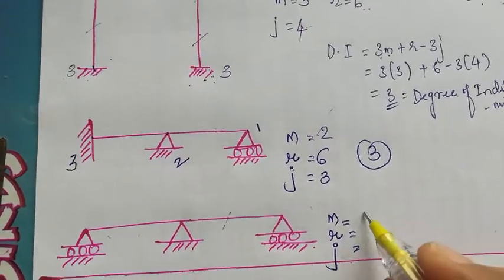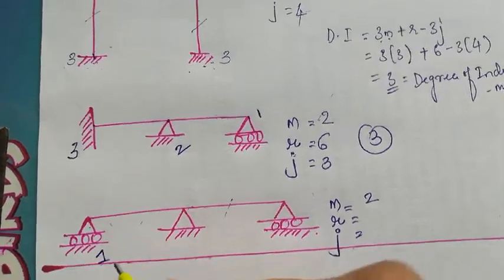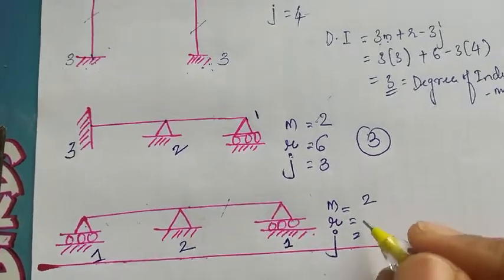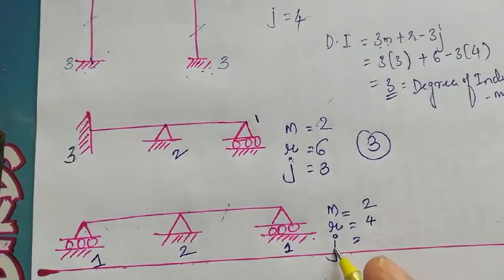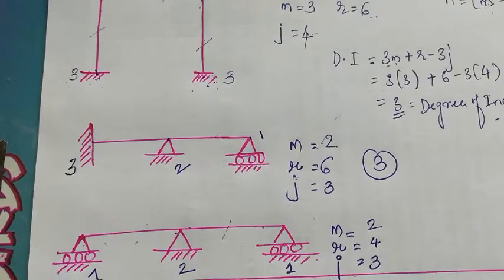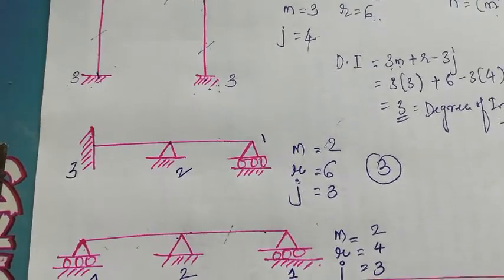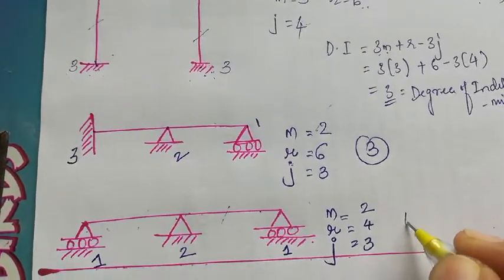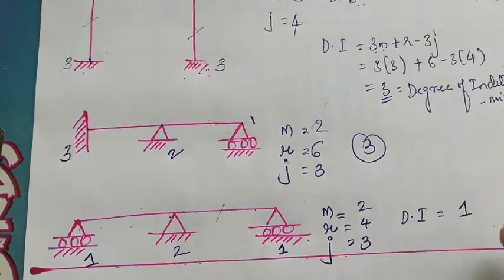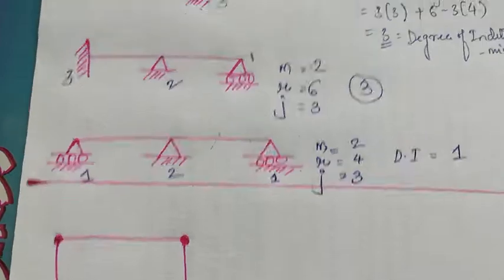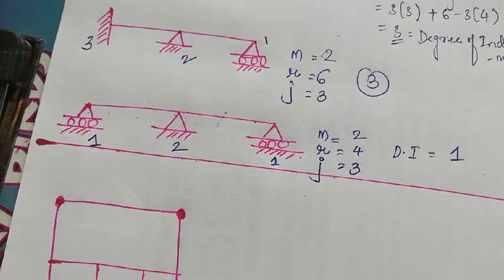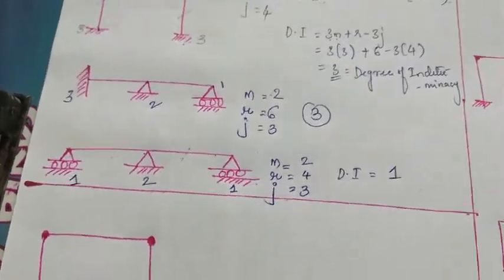A roller has one reaction, a pin has two reactions, and another roller has one reaction, so total r = 4. Joints: 1, 2, and 3, so j = 3. Substituting into 3m + r - 3j, the degree of indeterminacy = 1.